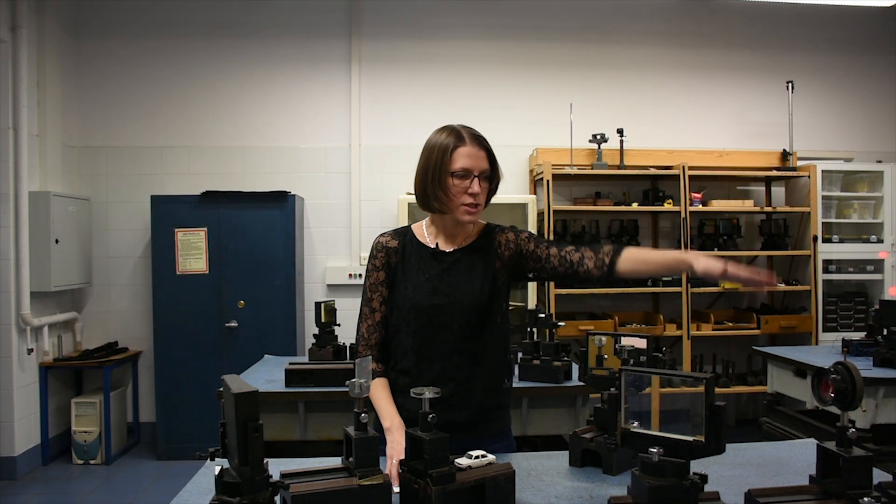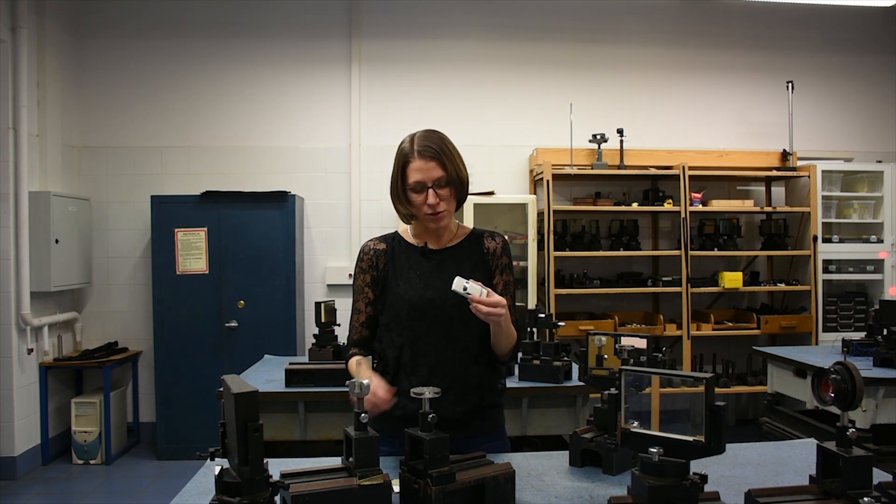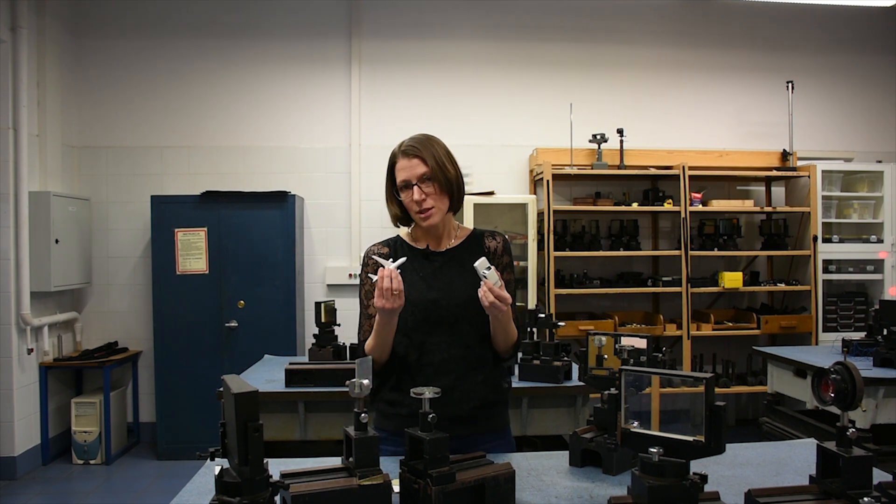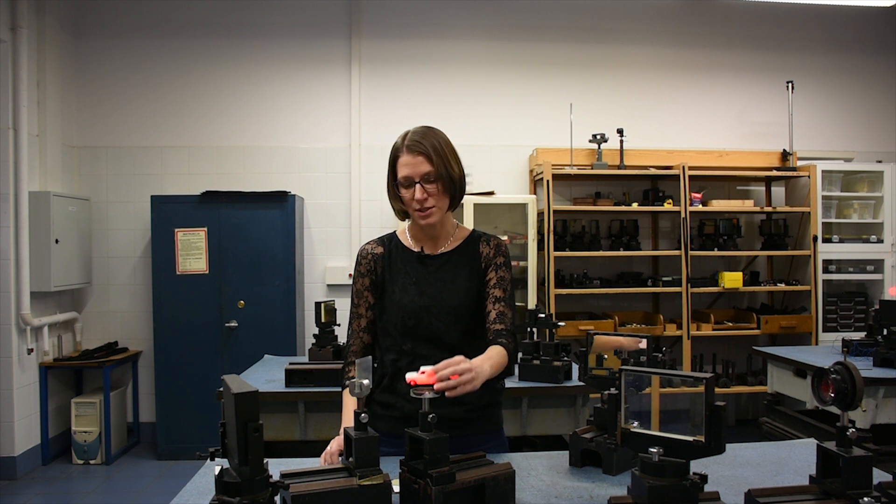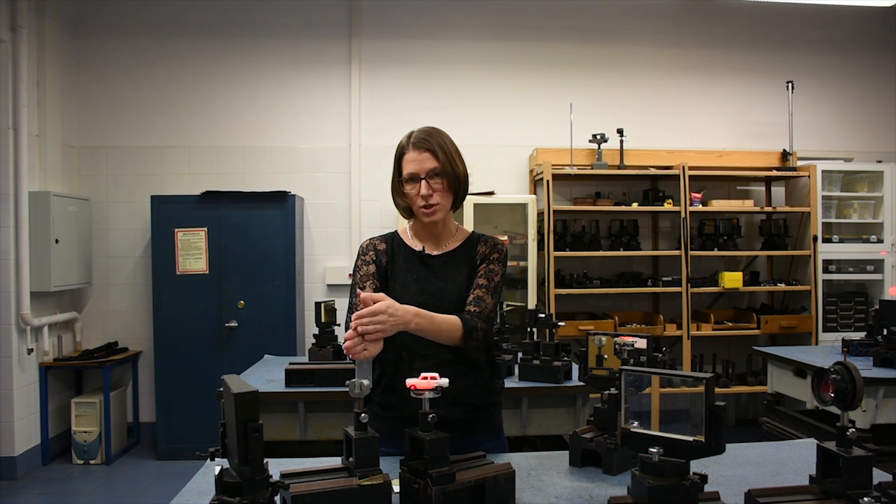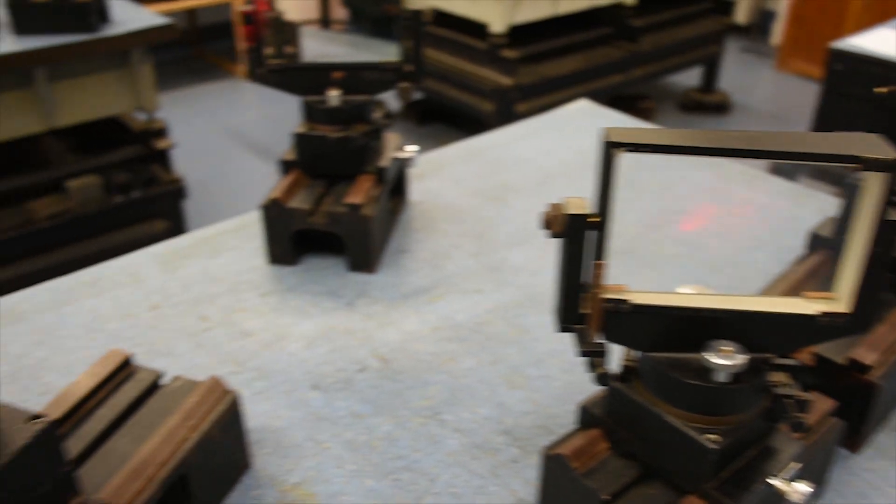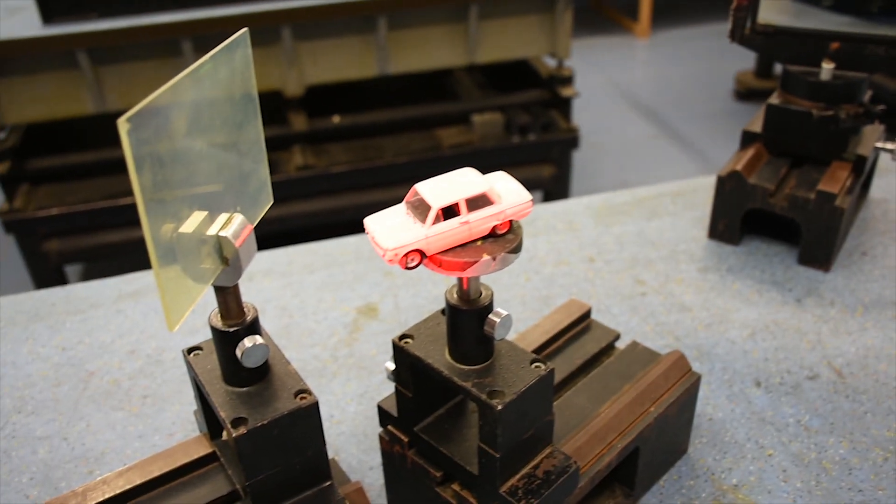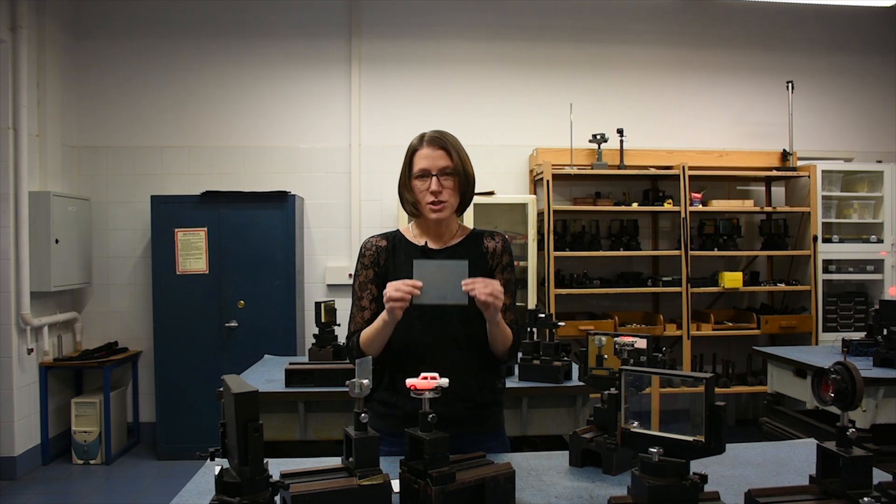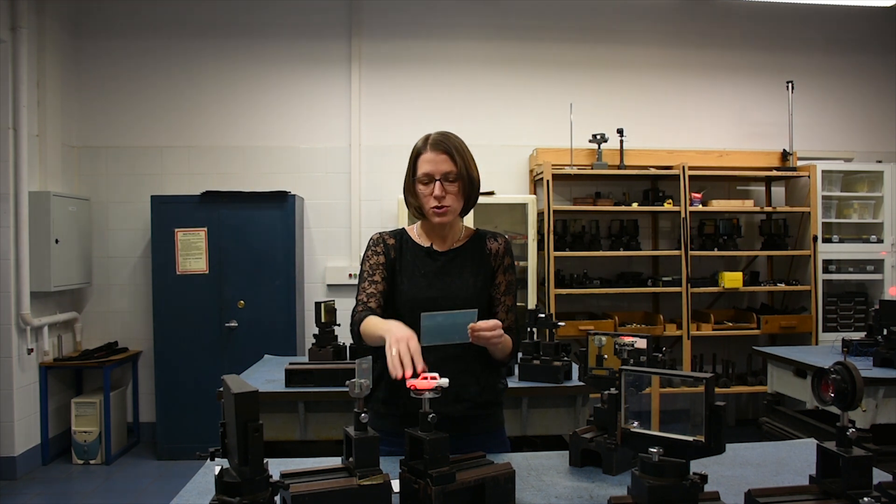To, co my robimy, to wiązkę laserową dzielimy na dwie części i potem jakiś nasz obiekt, który był samochodzikiem, samolocikiem, jakimś fizycznym obiektem, stawiamy, oświetlamy i na płytce zapisujemy jedną wiązkę, która nam się odbija od obiektu i drugą wiązkę, która pada z boku. Taka mieszanina tych dwóch wiązek zapisuje się na płytce, która potem w przypadku odtwarzania ugina światło, tworząc obraz naszego obiektu. Tak się dzieje w przypadku klasycznym.